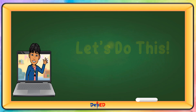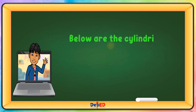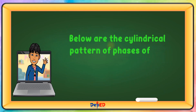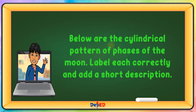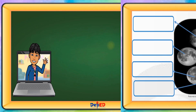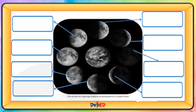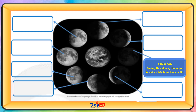Below are the cylindrical pattern of phases of the moon. Label each correctly and add a short description. New Moon — during this phase, the moon is not visible from the Earth.